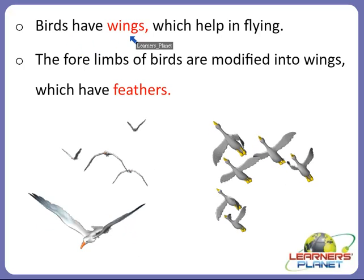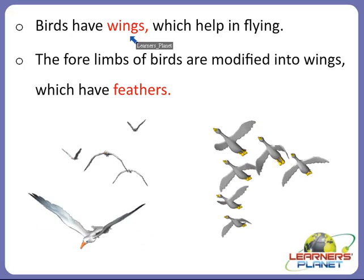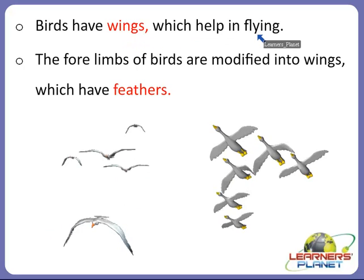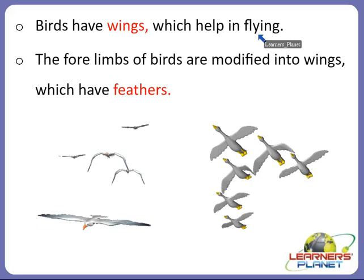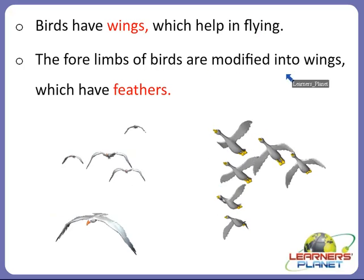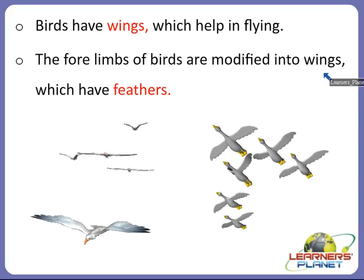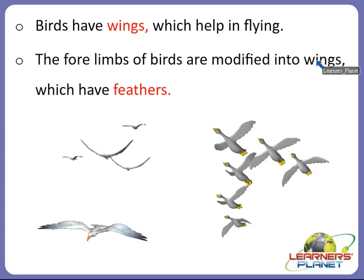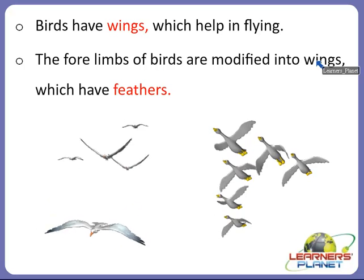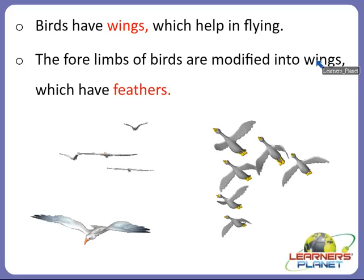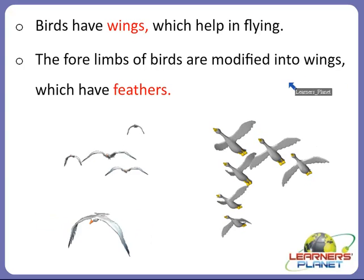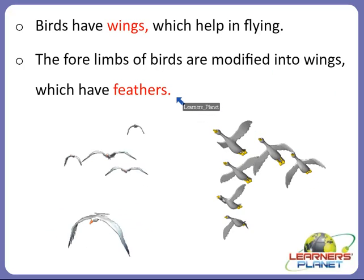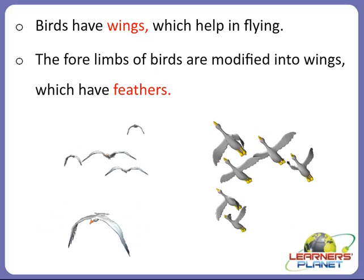Birds have wings which help them in flying. The fore limbs of birds are modified into wings which have feathers. There are also flightless birds — some birds are unable to fly because their wings are too weak for flying, for example kiwis, ostriches, and emus. The rest of the birds have wings modified from fore limbs that are strong enough to fly.